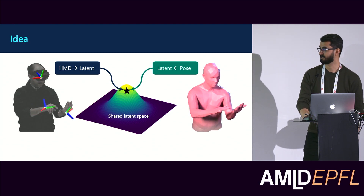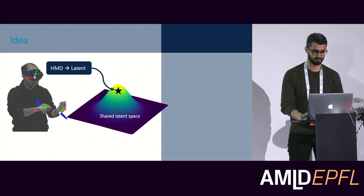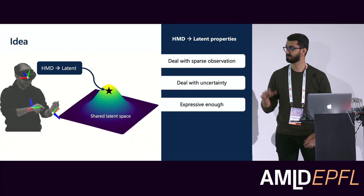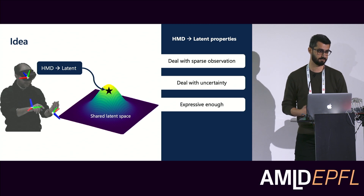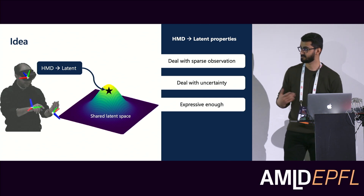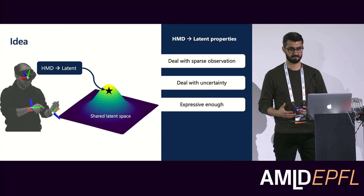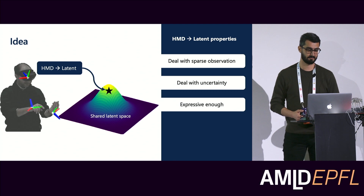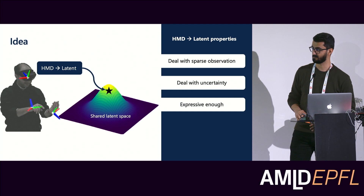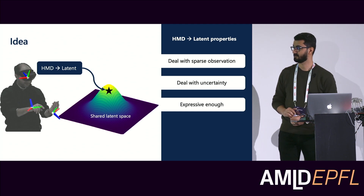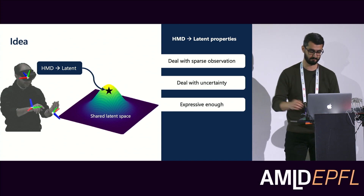The whole point of training is to make sure these two functions point into the same region in the latent space. However, in order to be useful for mixed reality applications, each function should have certain properties. For example, the mapping from the head-mounted device signal to the latent space should deal with the sparse observation, because that is the nature of its input. And because of that sparsity, there might be multiple plausible poses matching the head and hands observation, so the model should deal with uncertainty. The function should also be expressive enough that from the latent code we can recover the full-body pose.